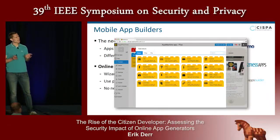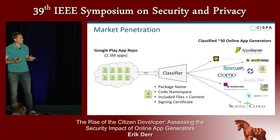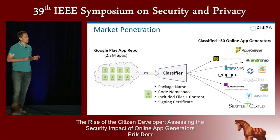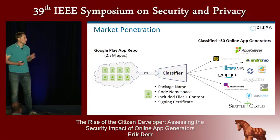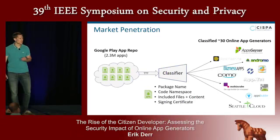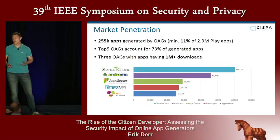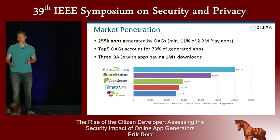These app generators literally allow you to create apps within minutes, and you must not write a single line of code. The first question that came to mind was: is this a new phenomenon or already established? To find out, we built a classifier that takes an Android app, extracts high-level characteristics like package name, code namespace, included files, and signing certificate information, allowing us to map apps back to their generating service. Applying this to a Google Play repository of about 2.3 million apps, we found that already 250,000 apps are generated by these online app generators.